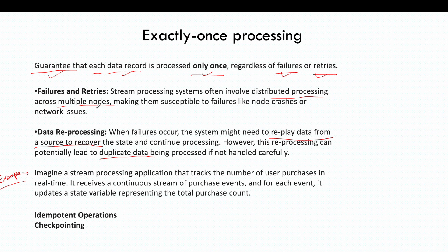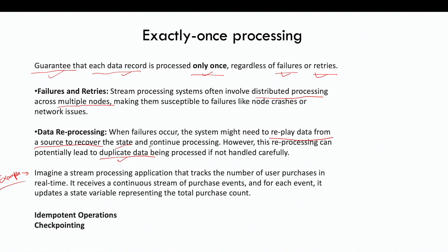Let's say one of the nodes crashes — how will the system behave in those cases? There can be scenarios where data is processed twice or more than once. If there is a failure and the system needs to recover, it will need to replay the data from the source to recover state information, and this reprocessing can potentially lead to duplicate data.